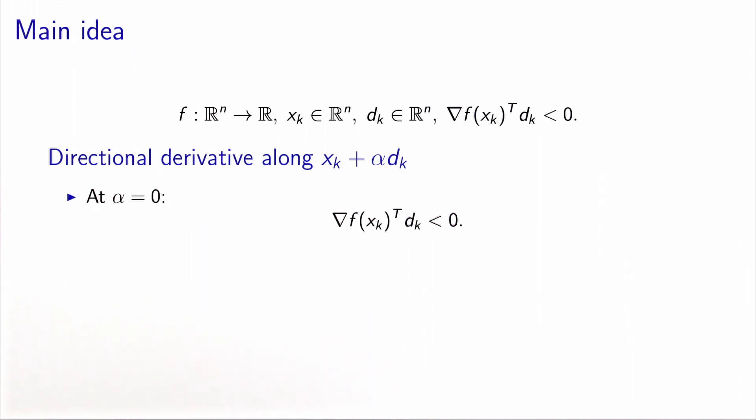And now if we proceed along the descent direction, at some point we will reach a local minimum, let's say the first one. And because it's a local minimum, at this point alpha star, the directional derivative must be zero.